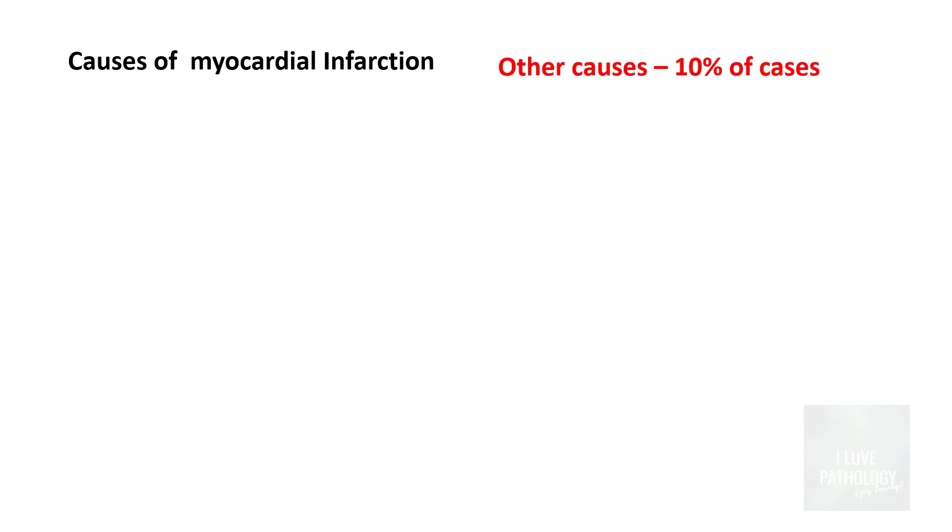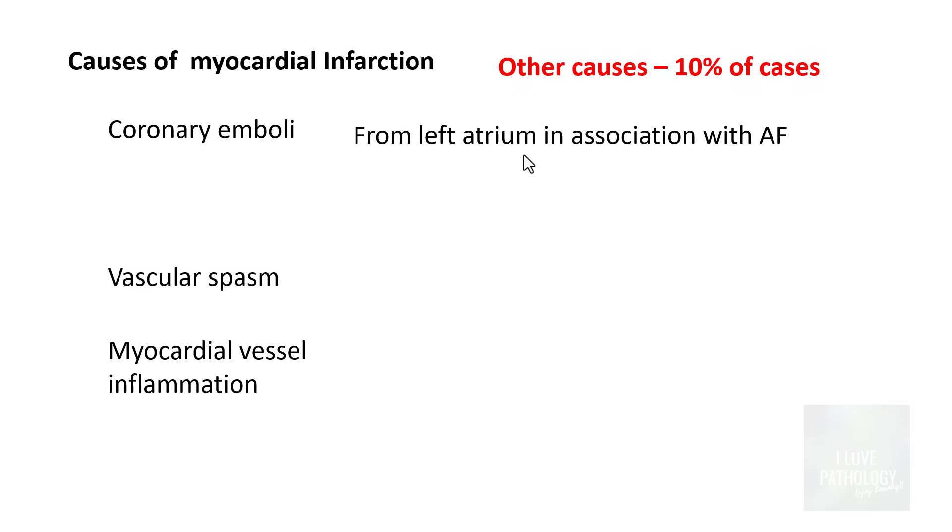These obstructive atherosclerotic lesions account for 90% of cases. The remaining 10% of cases could be because of coronary emboli, could be because of vascular spasm, or myocardial vessel inflammation. The cause for coronary emboli or the origin of coronary emboli could be from the left atrium in association with atrial fibrillation or it could be from mural thrombus, vegetations, or even prosthetic material.